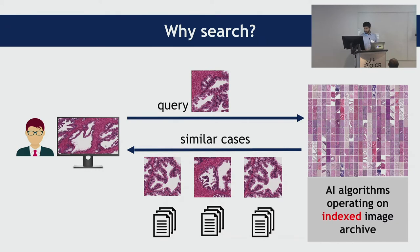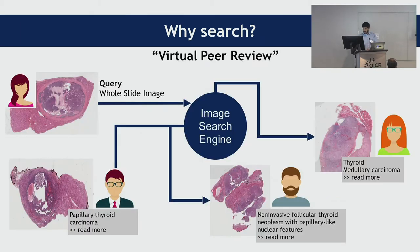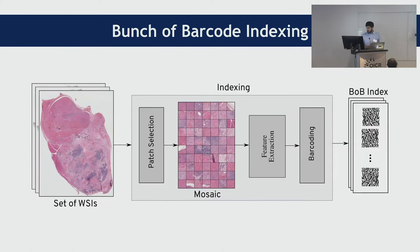AI algorithms could help in making these searches. Search is a sort of virtual consultation — a consultation with an AI agent instead of a real human being. The study I've done is called Bunch of Barcode. It's basically the indexing that I perform on WSIs — I take the WSIs and make them into a bunch of barcodes, which can be utilized for searching purposes. It involves a few steps: first is patch selection, then feature extraction from those regions, and then barcoding them.